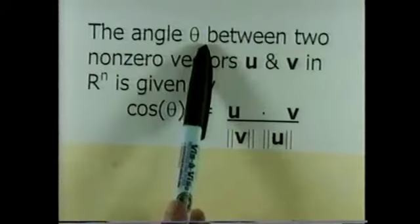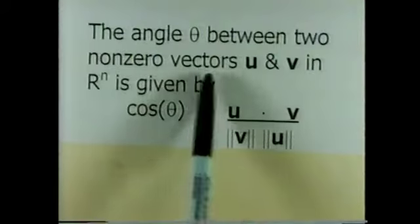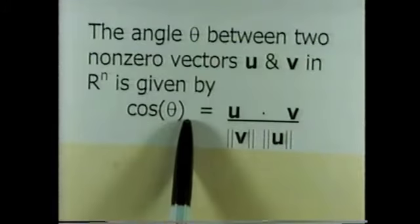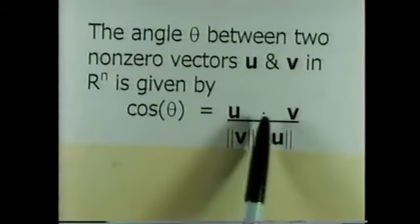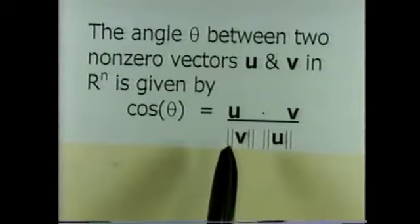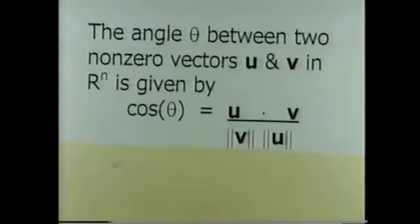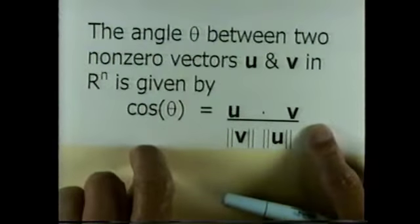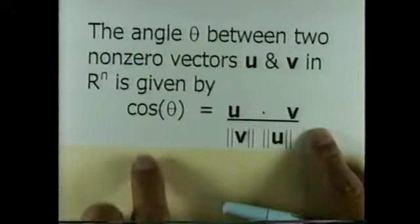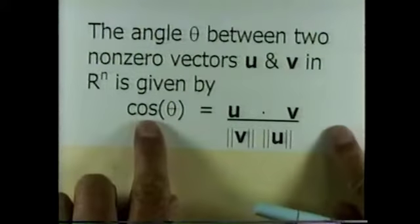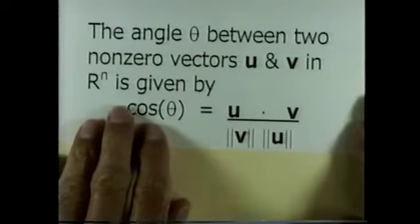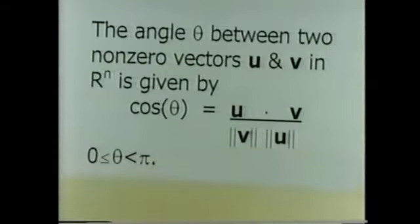The angle theta between two non-zero vectors u and v in n-space is given by: cosine theta equals u dot v divided by the magnitude of v times the magnitude of u. You can derive this result from the law of cosines, as derived in calculus class, and it can also be found in most textbooks. I'm not going to derive it today; I'm just going to show you how to use it. We are assuming that theta is between zero and pi.